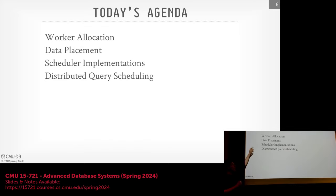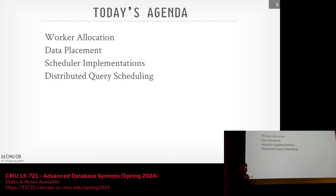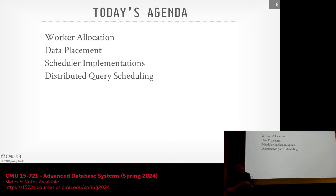We'll talk about what a worker actually is and how we define the scope of a computational unit — where it's located in our system. We'll briefly talk about data placement in the context of partitioning, and the link between the two. One thing the Morsels paper spent a lot of time on was the notion of local memory versus remote memory in a NUMA architecture — scheduling things so you're always processing data local to you. The same idea applies in a distributed system: ideally workers on a node process data local to it rather than going over the network.